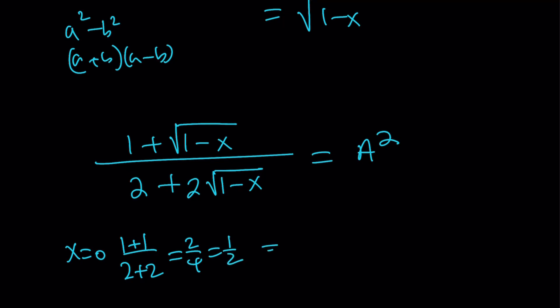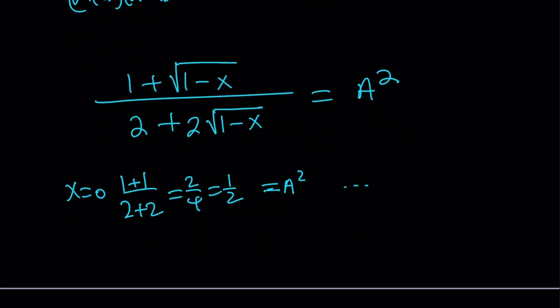So that is going to be 2 fourths, which is 1 half. Great. So a squared is 1 half. That means a is maybe square root of 1 half. But you kind of have to continue plugging in values. This is not going to work, obviously. You don't want to do it infinitely many times.